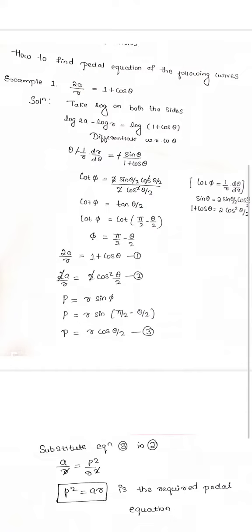We should take log on both the sides. After taking log, it becomes log 2a minus log r is equal to log of (1 plus cos theta). We should differentiate with respect to theta. When we differentiate log 2a, we get 0, and when we differentiate minus log r, we get minus 1 by r into dr by d theta, which is equal to minus sin theta by (1 plus cos theta). Both the minus signs get cancelled, and we know that 1 by r into dr by d theta is cot φ.